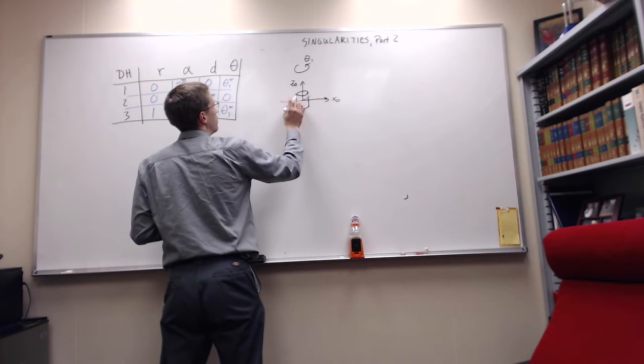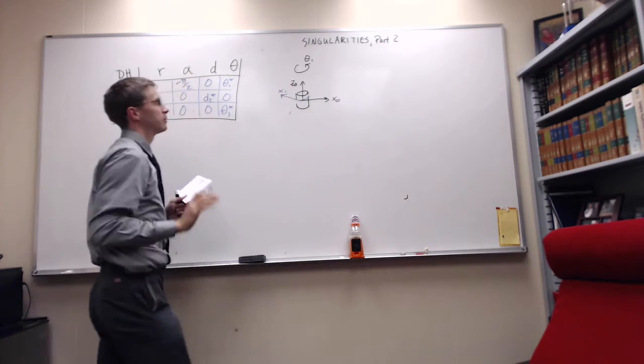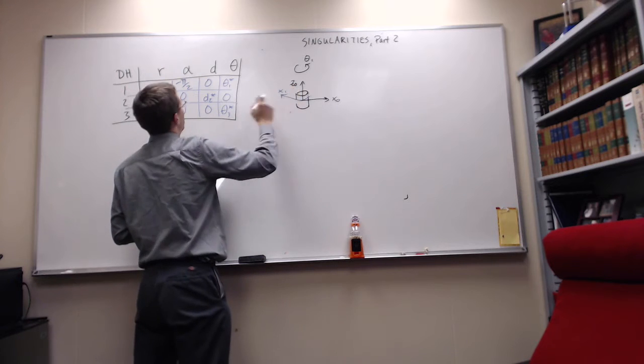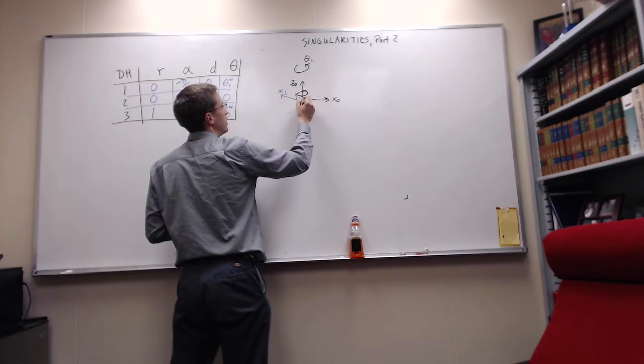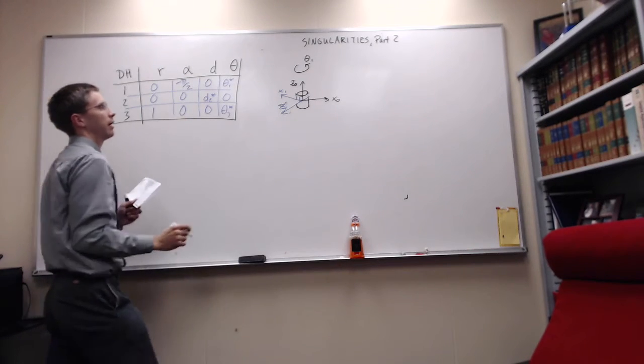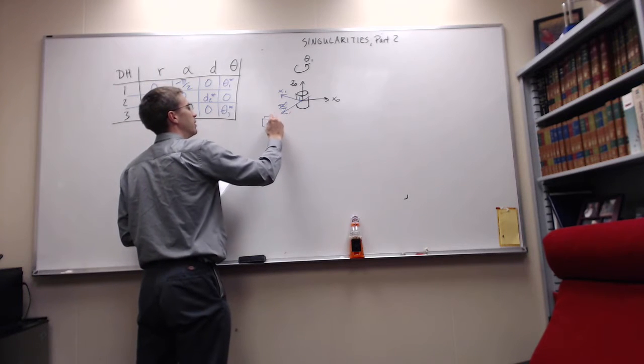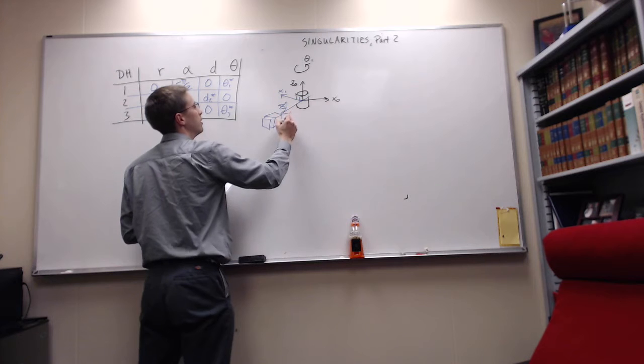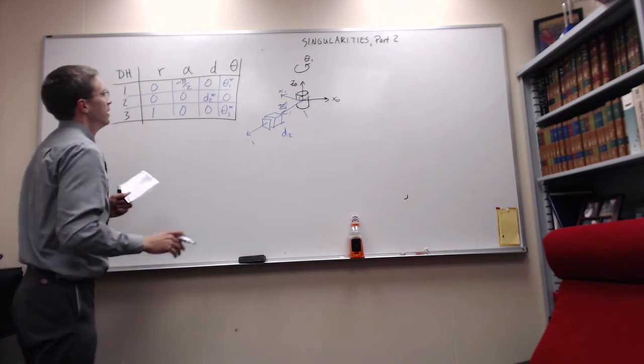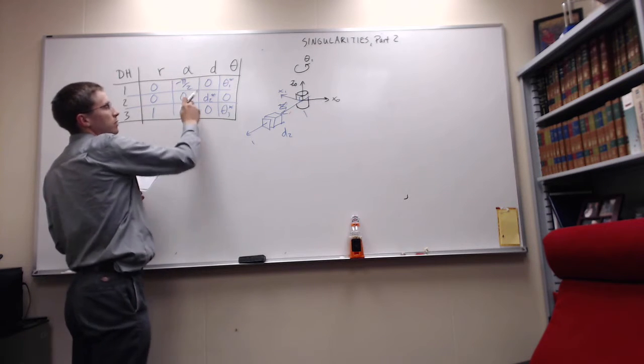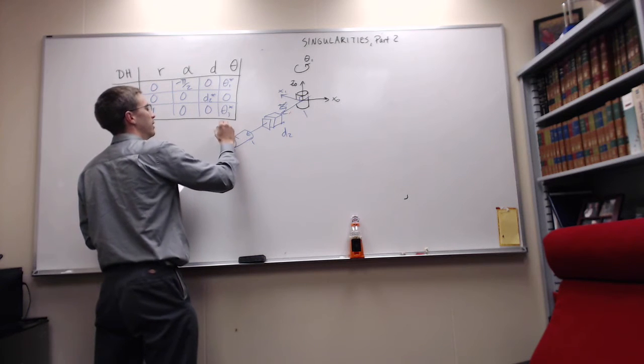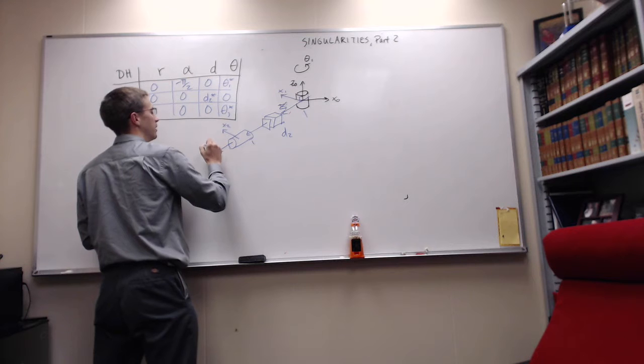Now our X one is somewhere like this. With the right-hand rule, it's going to rotate with a link twist of pi over two. So 90 degrees off from this is Z one. Along Z one is the extension by some length D two. This whole distance here is D two. At the end of that, I have no twist, so my next coordinate frame is exactly the same. I've got X two here and Z two here.